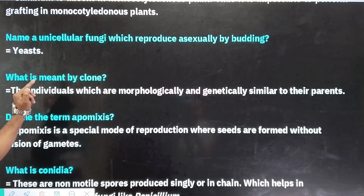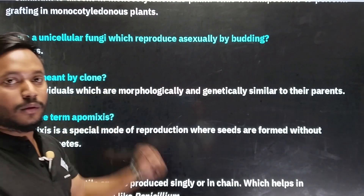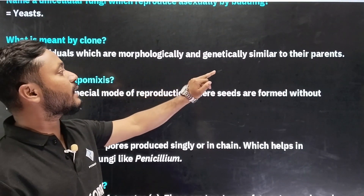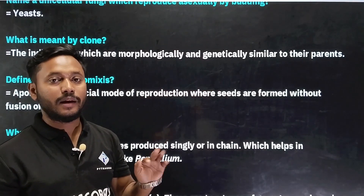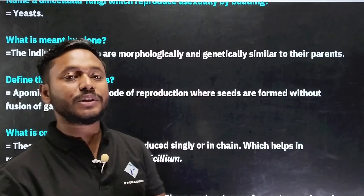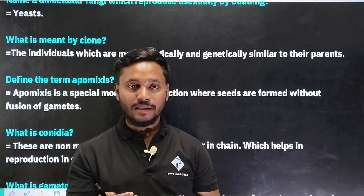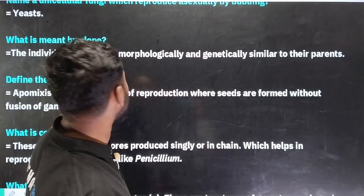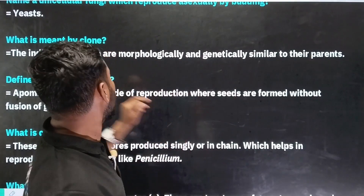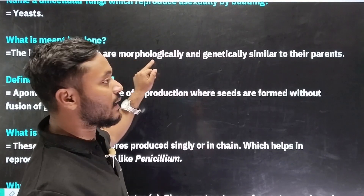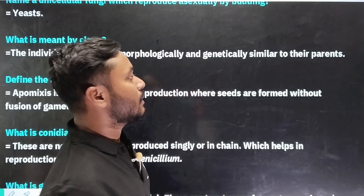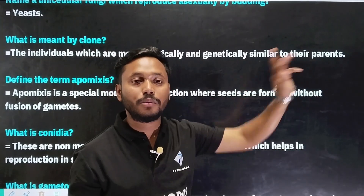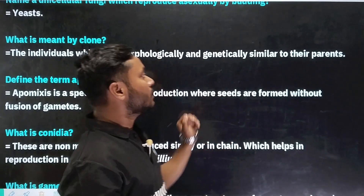What is meant by a clone? The individuals which are morphologically and genetically similar to their parents are called clones. Suppose we have reproduction — if the offspring produced are morphologically and genetically similar to their parents, this is a type of asexual reproduction.